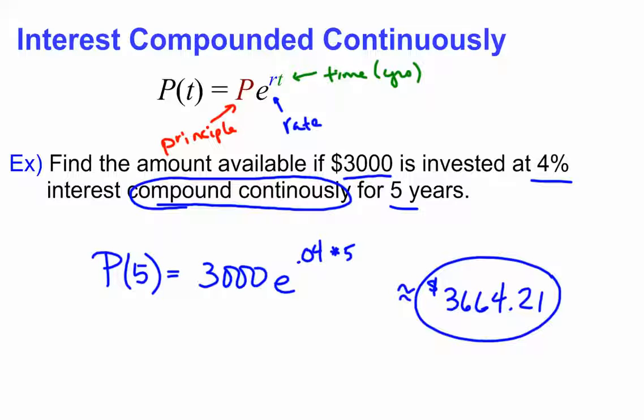So as soon as you hear that word or see that word in the problem, you're going to know it's related to this formula here, where P of T is equal to PE to the RT. I call it the PERT formula.